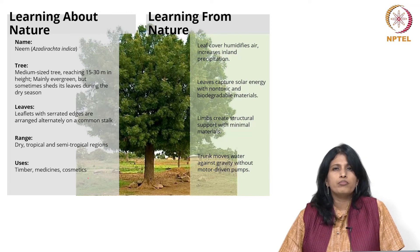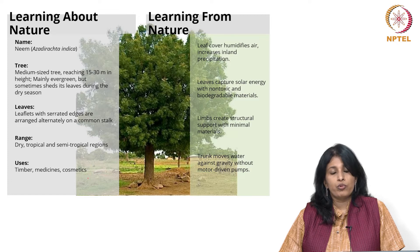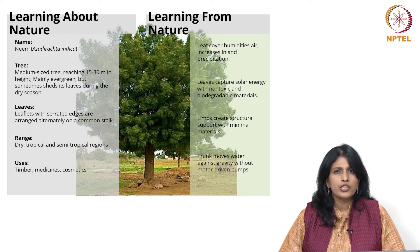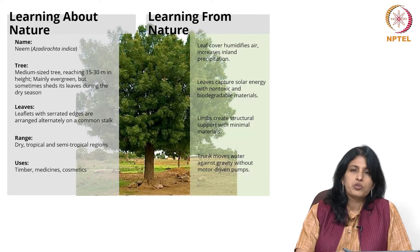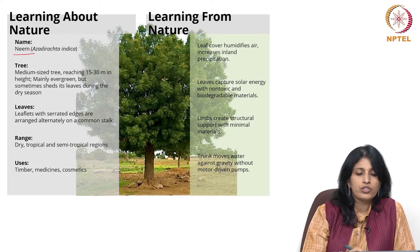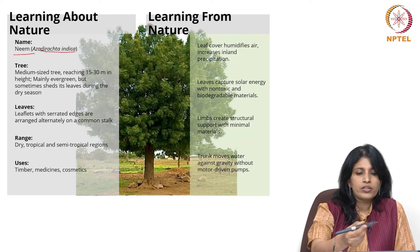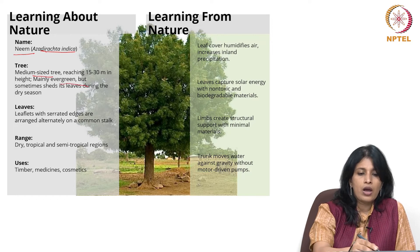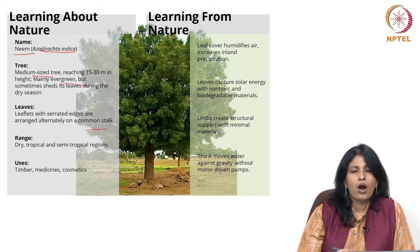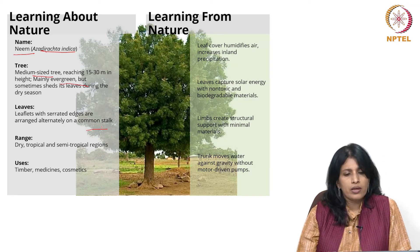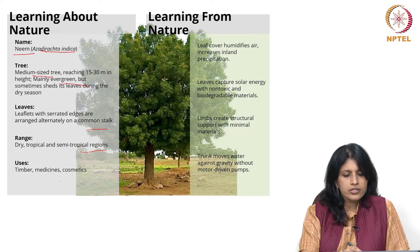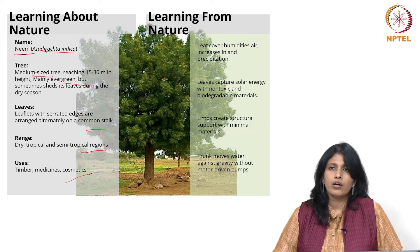Let's use the neem tree to understand learning about versus learning from nature. On the left, learning about nature: this is the name of the tree, its scientific name, its characteristics — it's a medium-sized evergreen tree, what the leaves look like, their shape, which seasons it grows best in, which geographical regions it inhabits, and what its uses are. That is typically learning about nature.